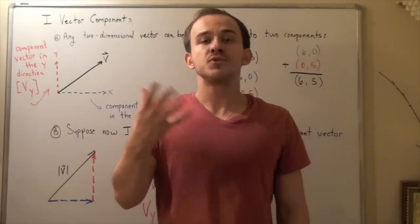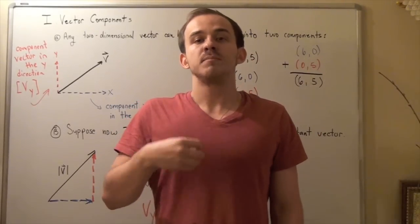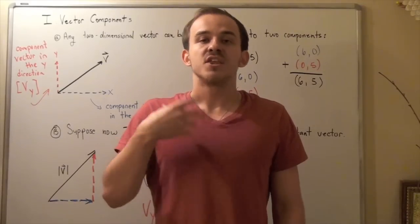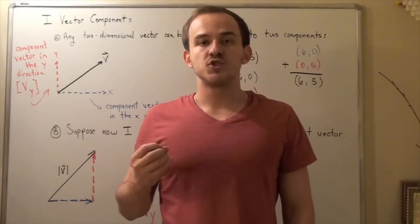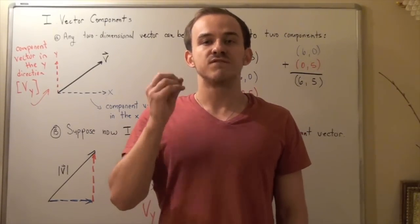So, the world around us, the objects around us, can all be described using vectors. The way they interact with other objects can be described using vectors.